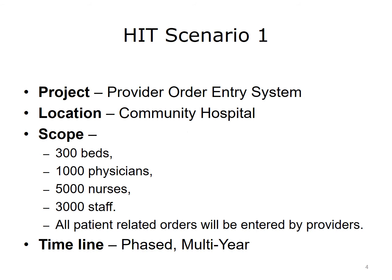Your project scope outlines the project boundaries and deliverables — everything that affects or is affected by the project and the expected results. This scenario takes place in a community hospital with about 300 beds, 1,000 physicians, 5,000 nurses, and 3,000 ancillary staff. The project will be phased in over several years, starting in the emergency department before rolling out throughout the hospital, ending with the ICUs.